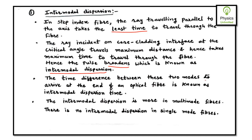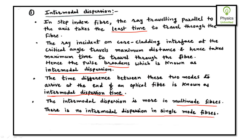The time difference between the two modes to arrive at the end of the optical fiber is known as intermodal dispersion time. Intermodal dispersion is more in multimode fibers and there is no intermodal dispersion in single mode fibers, since a single mode or mono mode step index fiber essentially transmits only one signal.